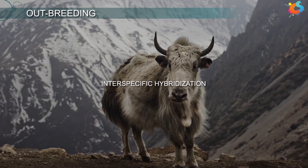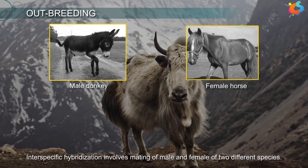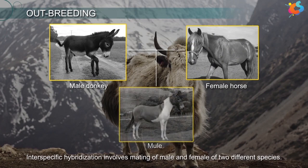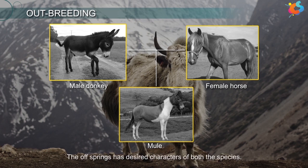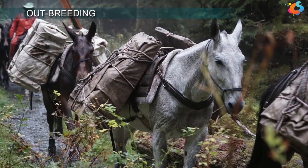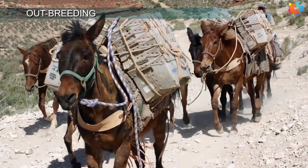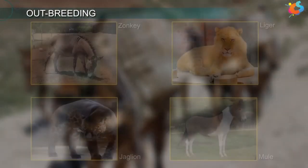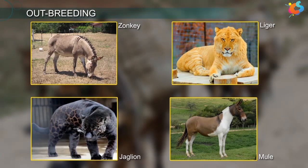Interspecific hybridization involves mating of male and female of two different species. The offspring has desired characters of both species. For example, when a male donkey is mated with a female horse, the offspring is called a mule. Mules can survive in harsh environments and are capable of doing hard labour, so they are considered good beasts of burden. One big problem with interspecific hybridization is that the hybrids are sterile. However, due to their high economic benefits, they are bred regularly.